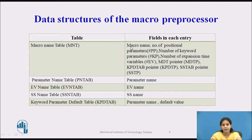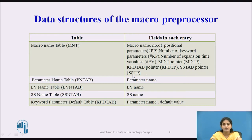In the MNT table there are seven fields. The first field is the macro name. The second field is the number of positional parameters, represented by #PP. Third is the number of keyword parameters, represented by #KP. The next field is the number of expansion time variables, represented by #EV. Next is the MDT pointer (MDTP), then the keyword parameter default table pointer (KPDTP), and lastly the sequencing symbol table pointer (SSTP).